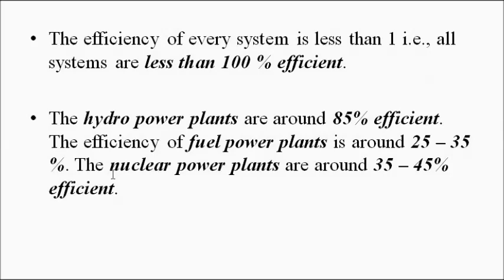No system in this world is 100% efficient. When it comes to power plants, the fuel power plants — coal and natural gas — which contribute to the bulk of power generation, have an efficiency of only 25 to 35 percent. Nuclear power plants have an efficiency of around 35 to 45 percent. Hydro power plants are around 85 percent efficient. So for fuel and nuclear power plants, we get only 25 to 45 percent output compared to the input.